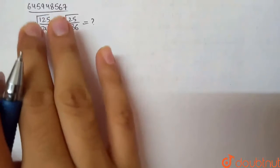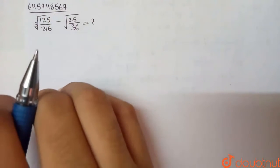Next question is: cube root of 125 by 216 minus square root of 25 by 36.